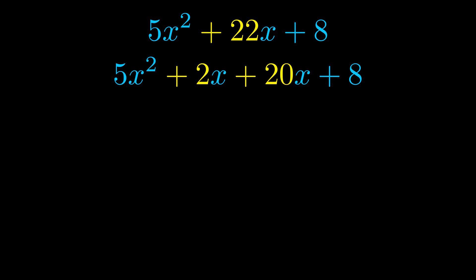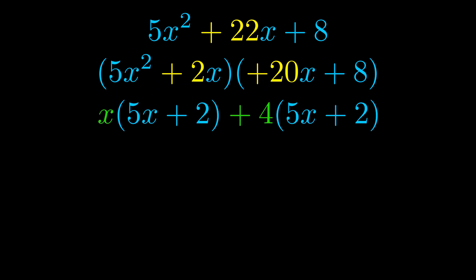Once we've done this we go ahead and put parentheses around the first term and the last term. And we do that so that we can take the greatest common factor out of both terms. We can see the greatest common factor is now outside in green.